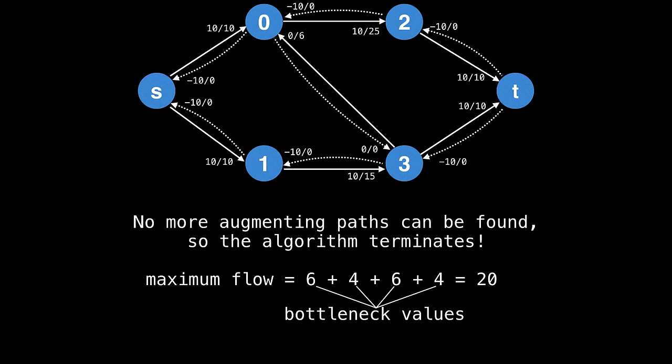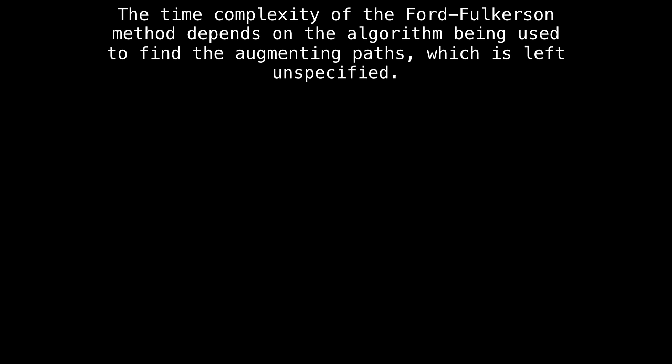And at the end, we can see that if we sum all our bottleneck values, six, four, six, and four, we're able to achieve the maximum flow, which is 20.